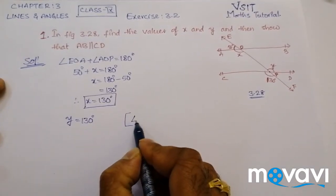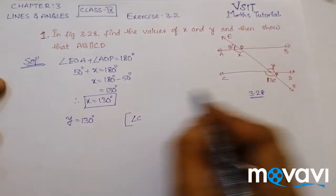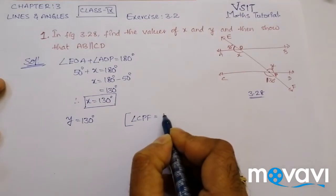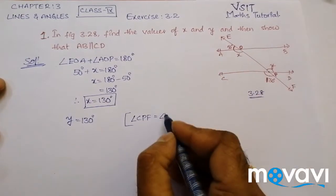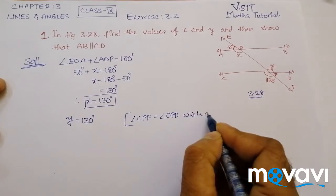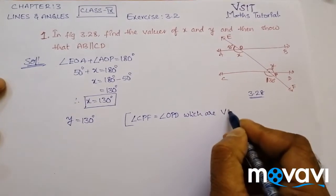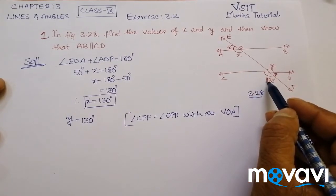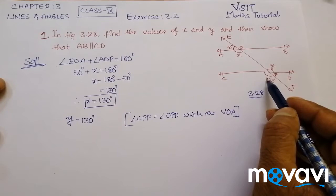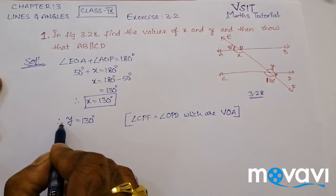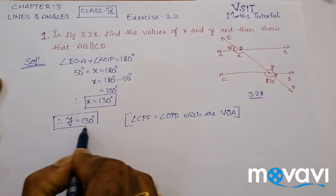The reason is that angle CPF is equal to angle OPD, which are vertically opposite angles. So these two are vertically opposite angles, and their measures are the same and equal. Therefore Y is equal to 130 degrees.